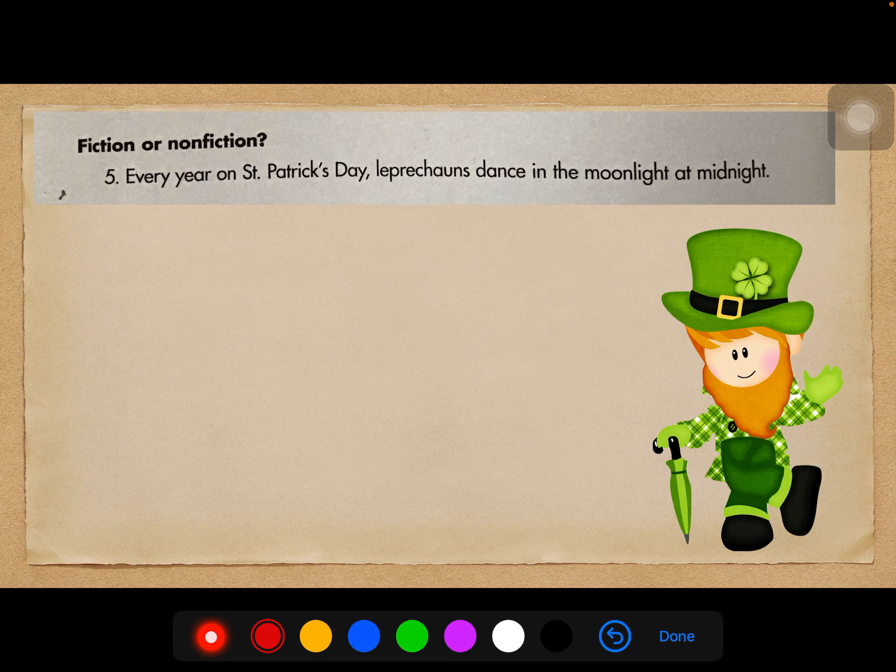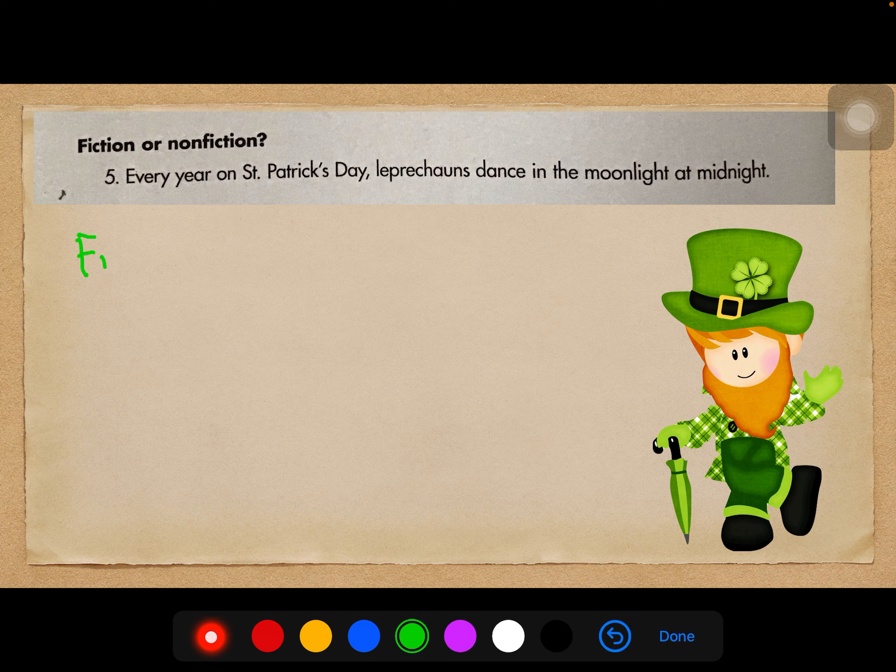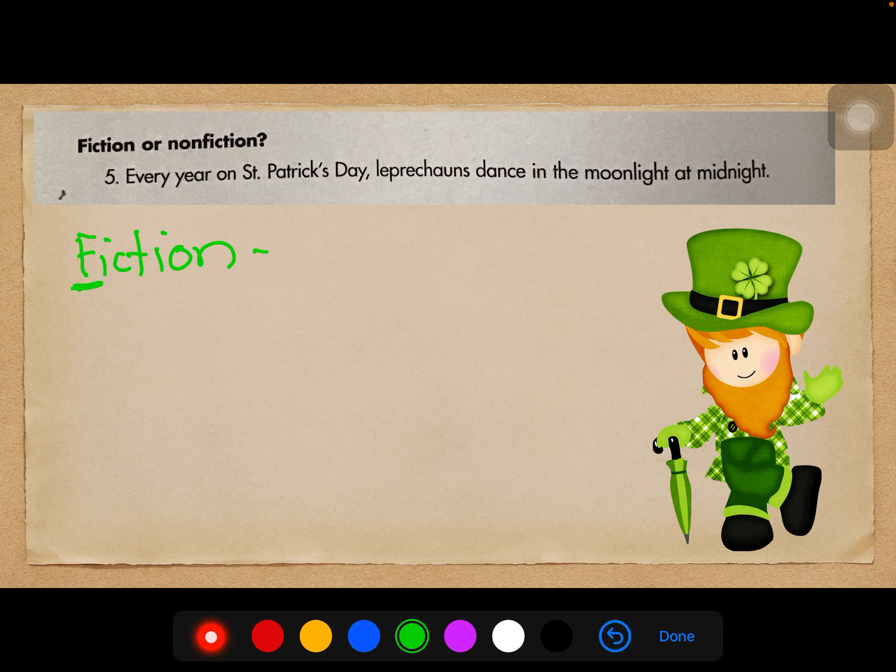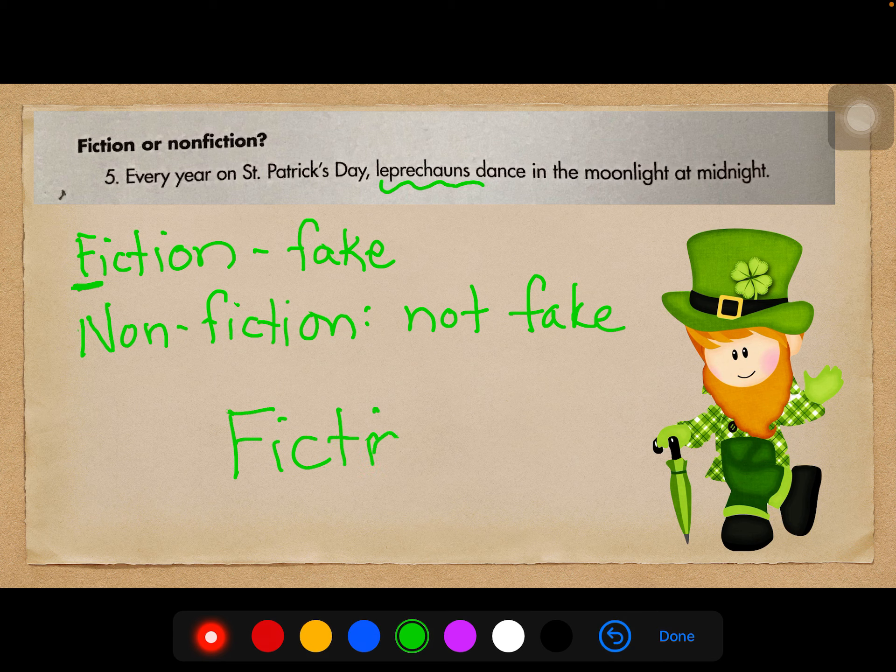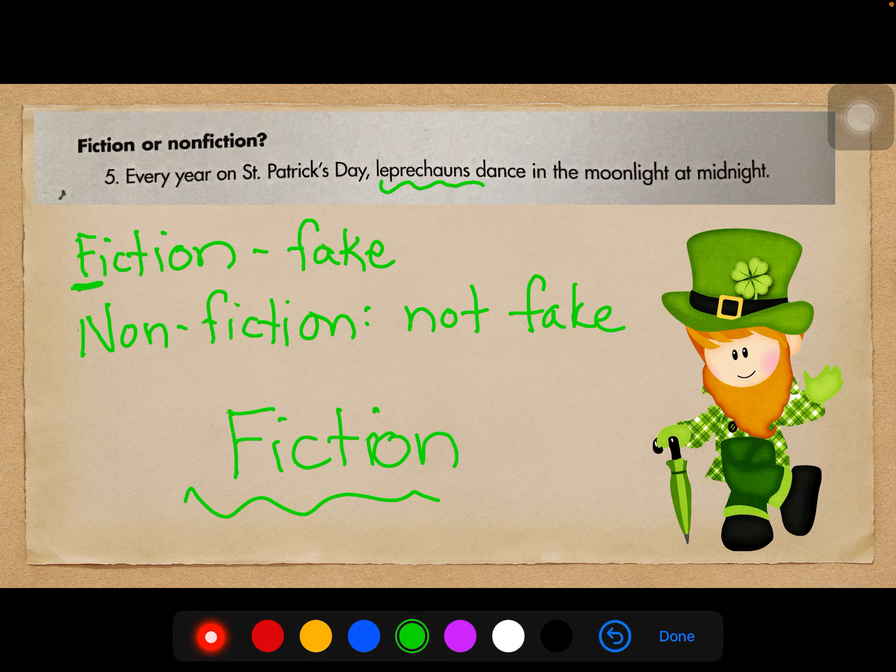Alright, next. Fiction or non-fiction. Every year on St. Patrick's Day, leprechauns dance in the moonlight at midnight. Okay, I'll do this in green. Fiction, I always remember that F means fake. Make believe, not true. Non-fiction means not fake or true. Okay, and in this case, leprechauns dancing around is just a myth. It is fiction. It's fake. Make believe. You can ask anyone in Ireland and they don't see leprechauns dancing around.